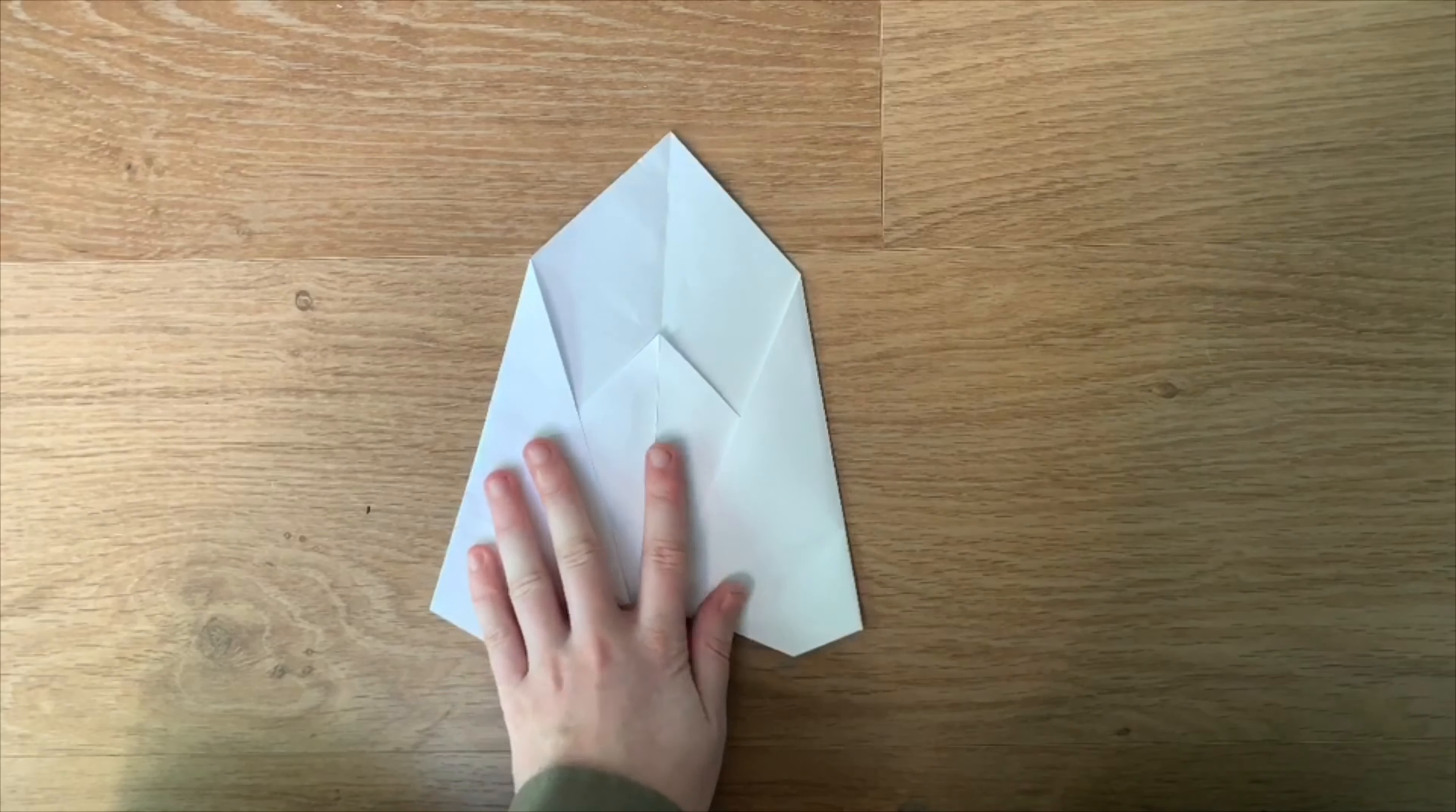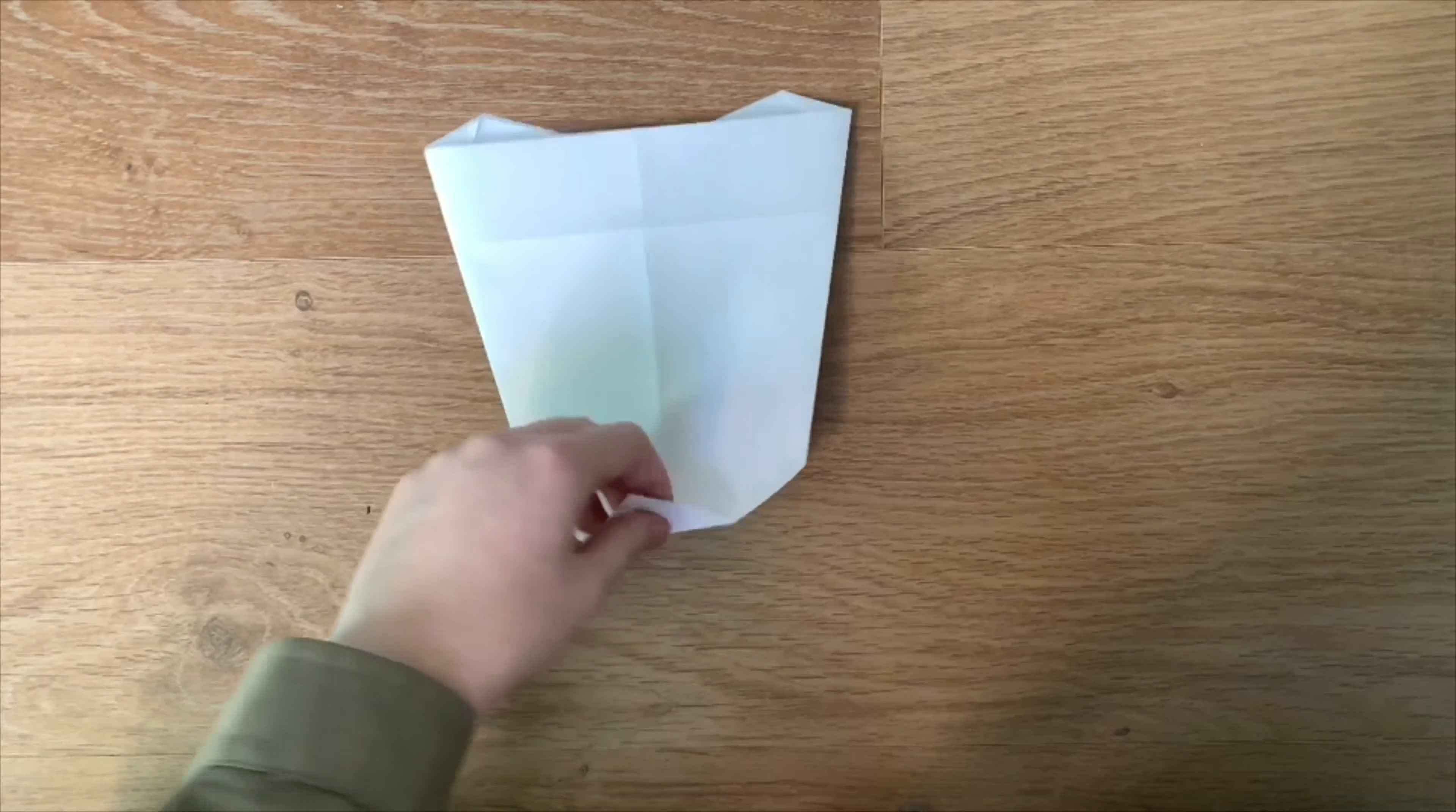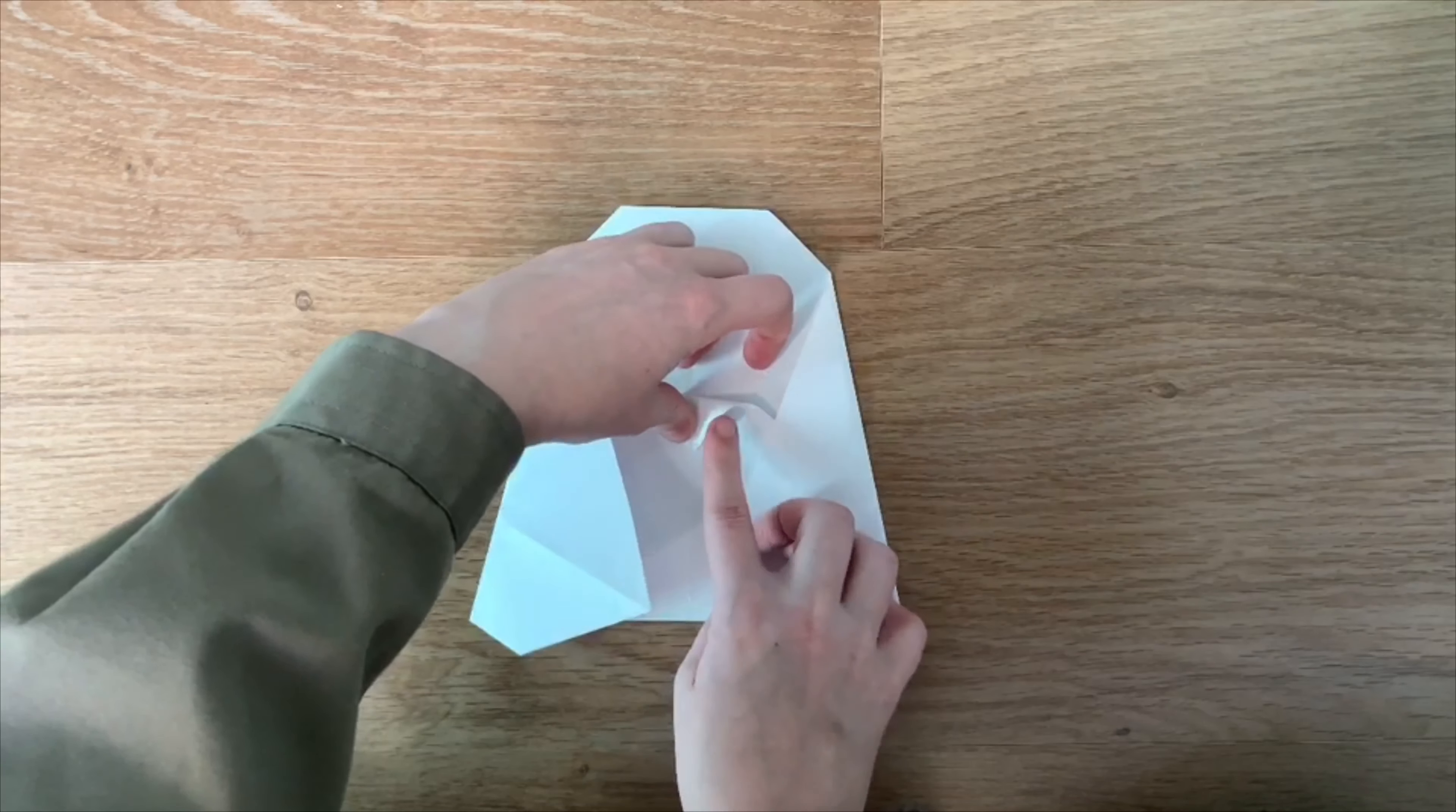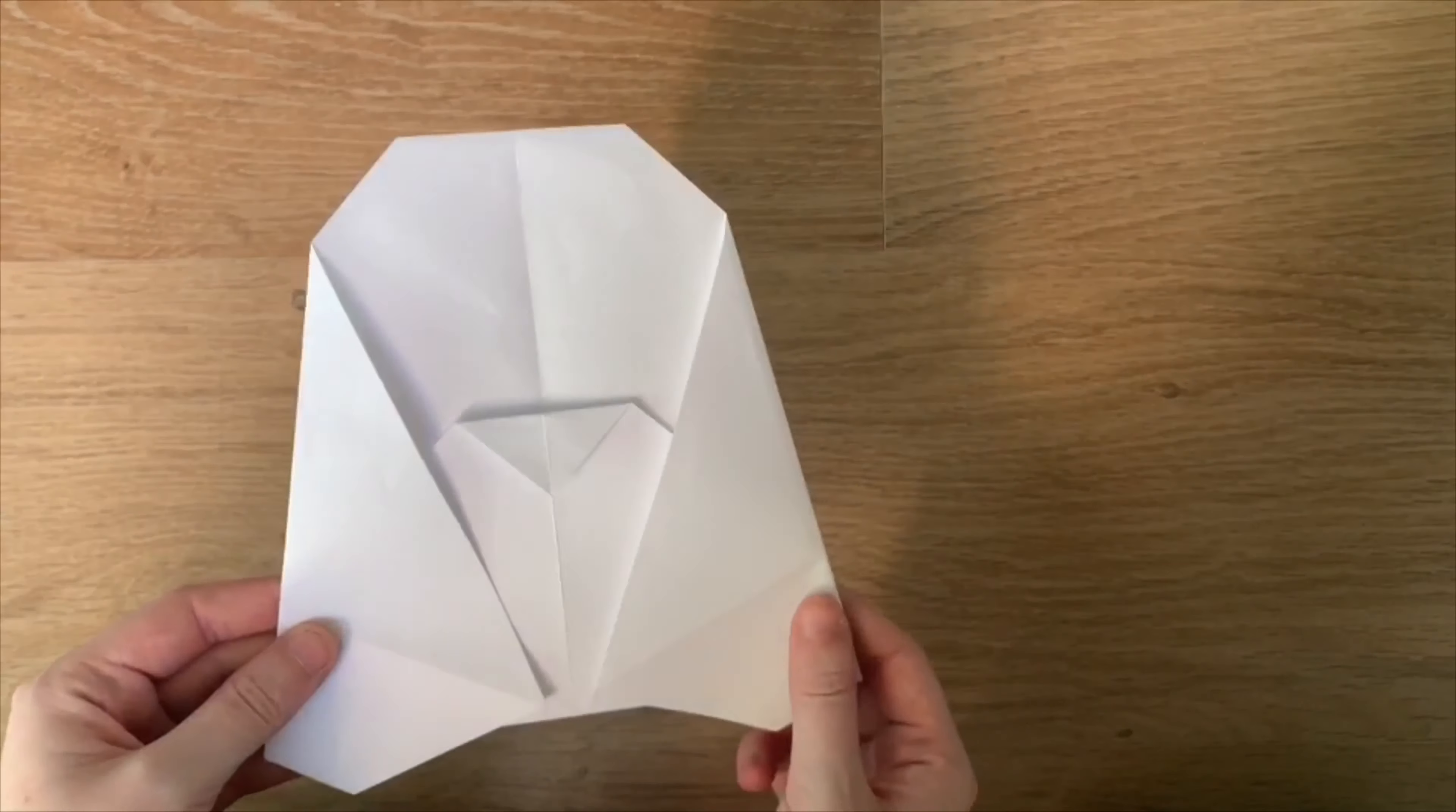From here, you need to take this top corner, just like we did with the penguin, and fold it underneath however much you want. I do it about an inch. Then take this flap here, take this corner and fold it down to make a beak. Again, you can make it as big or as small as you'd like. I do it about just under an inch. So there we have it. That is your owl.